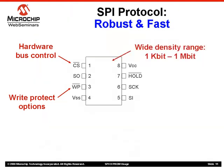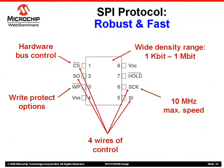The bus has a wide density range of 1 kbit all the way up to 1 megabit. The SPI protocol is the fastest of the three EEPROM buses, with most SPI devices having a maximum speed of 10 megahertz. In comparison, Microwire devices have a maximum speed of 3 megahertz, and I2C devices top out at 1 megahertz. Finally, SPI is a 4-wire bus with chip select, clock, data out, and data in all connected to the master with individual signal lines. This requires using several microcontroller pins, but it also means that the designer has more control of the bus and can design a very robust system. The added functionality does add to the die size, so SPI EEPROMs are slightly more expensive than the other two EEPROM protocols.